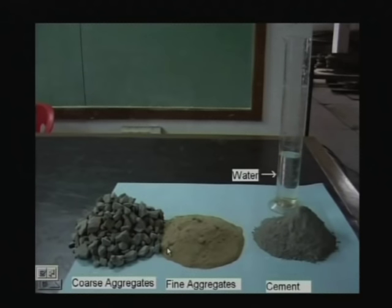We designate grades like M15 and M20. M15 means we have to achieve a concrete strength of 15 N/mm² after 28 days. M20 means 20 N/mm² — 'M' stands for mix and the number is the strength in Newton per square millimeter. If you test the concrete cube on day 28, you should achieve that particular target strength.